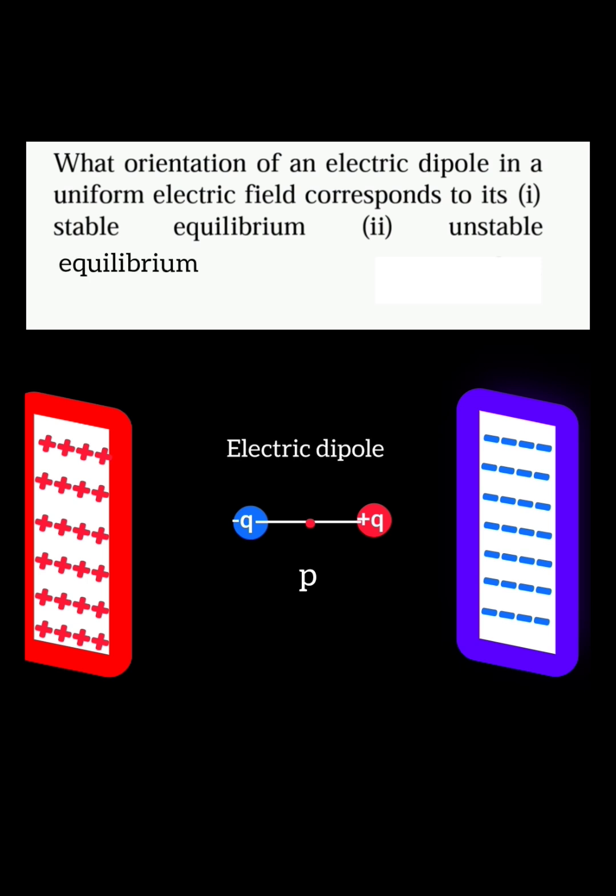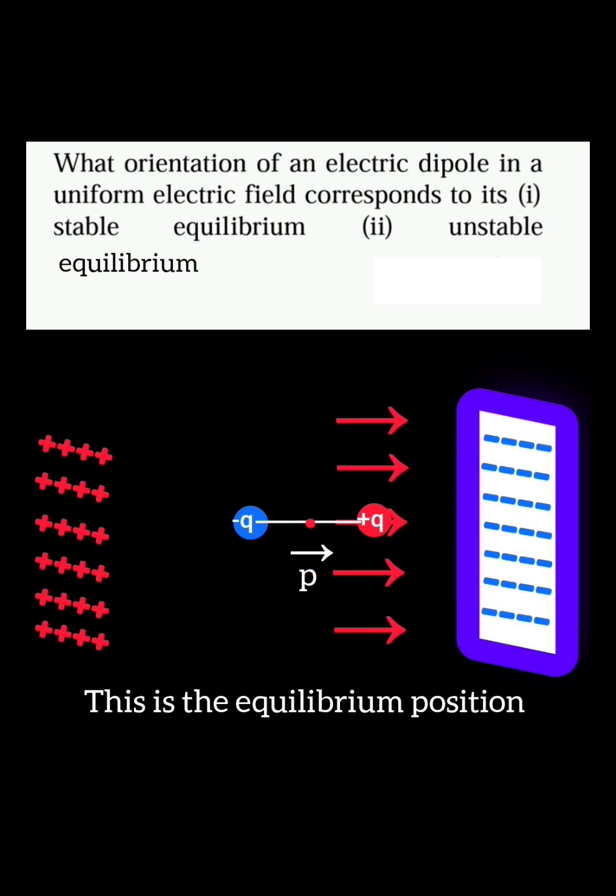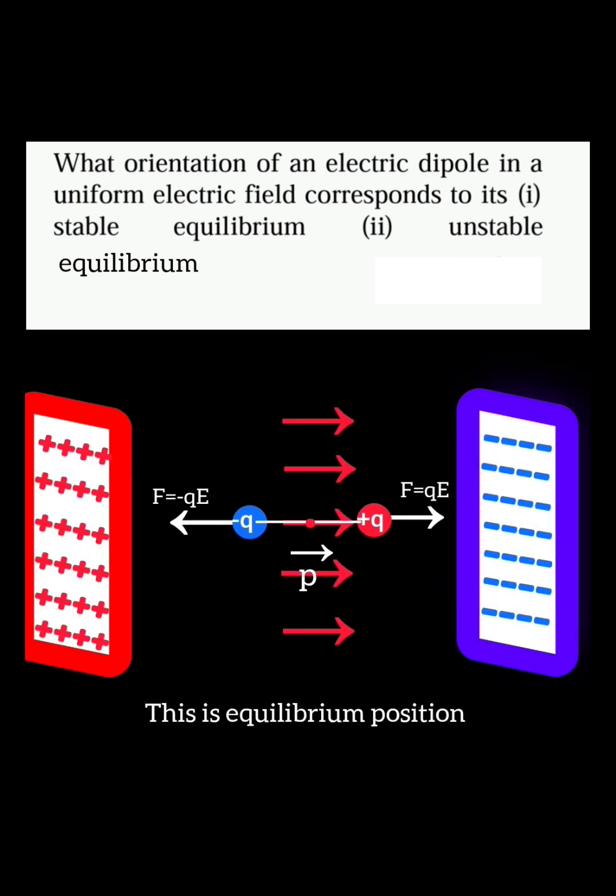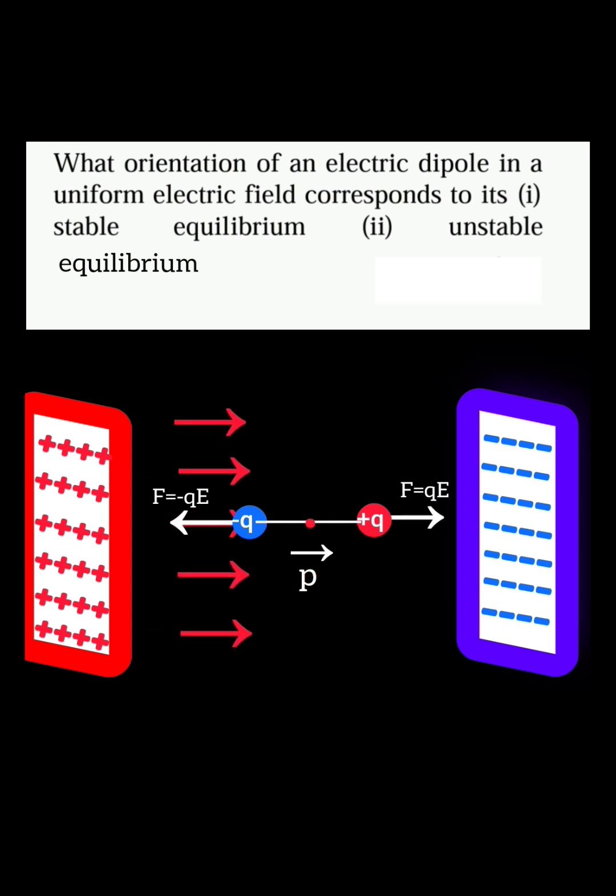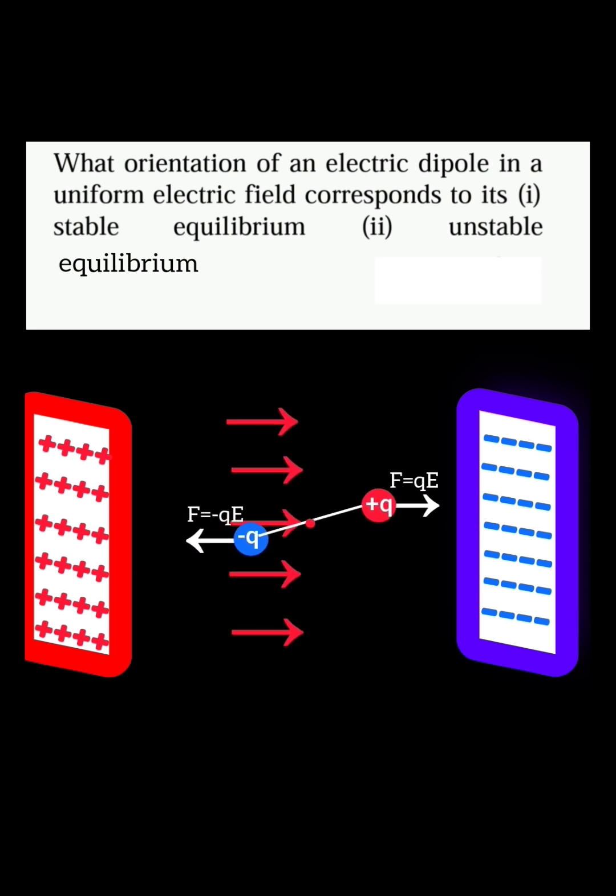When we place an electric dipole in a uniform electric field, such that the positive charge is towards the negative plate and negative charge is towards the positive plate, the forces exerted by the electric field on the charges of the dipole are equal in magnitude and opposite in direction, which makes the dipole stay in stable equilibrium. The dipole is stable because if it is displaced angularly, it will come back to the same position again.